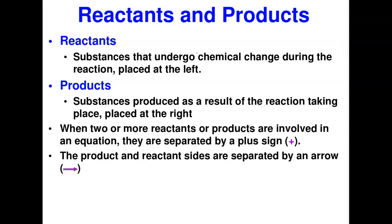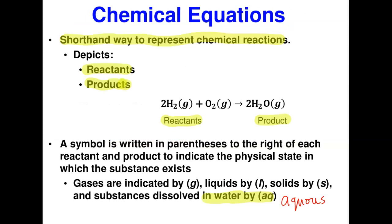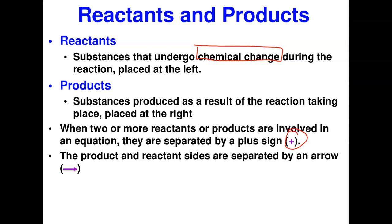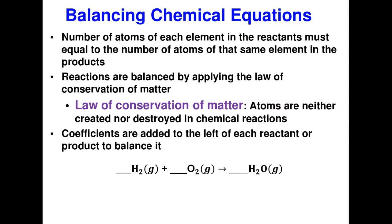The reactants are substances that undergo the chemical change, and the products are those things formed as a result of that change. When you have two reactants or products in a chemical reaction, they are separated by a plus sign. The reactants and products are separated by an arrow — that is the function of the arrow, to separate the product from the reactant.